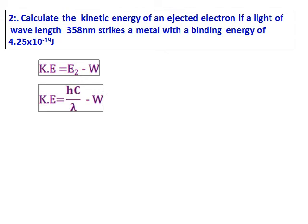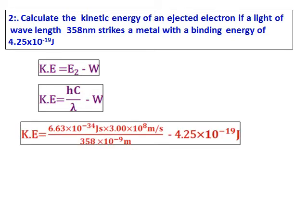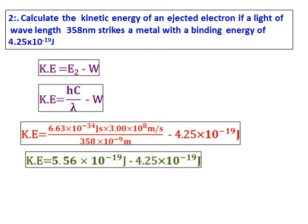E2 is not given but the wavelength is given. Therefore, substitute E2 in terms of hc over lambda and W is given, lambda is given, we know h and c. Substitute all the values and get the value of kinetic energy. And as usual, remember to convert the wavelength from nanometre to metre.